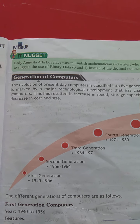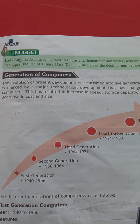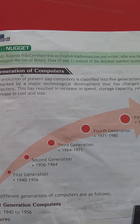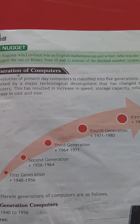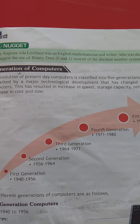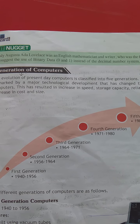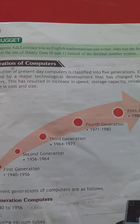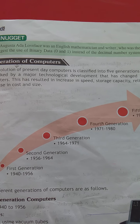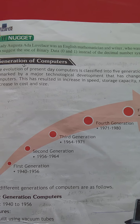Each generation has its own characteristics and its own time period, so we can differentiate between time period and characteristics. We have five generations divided into five categories.